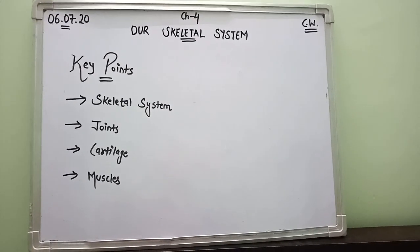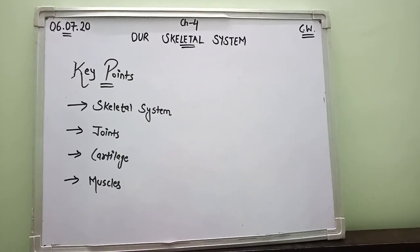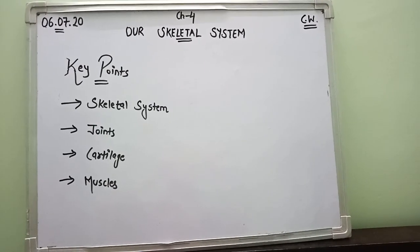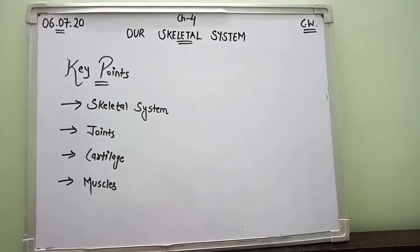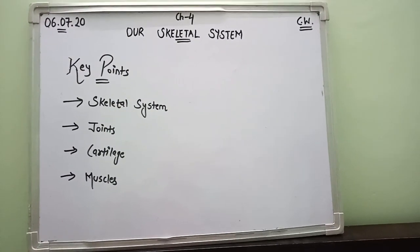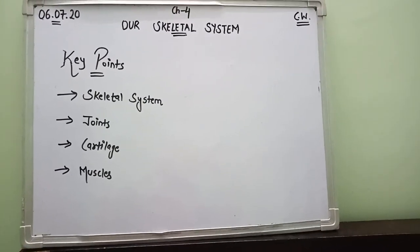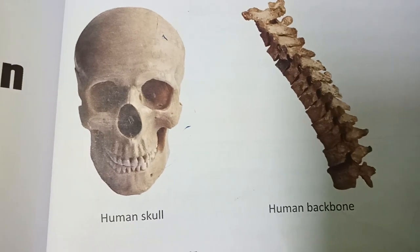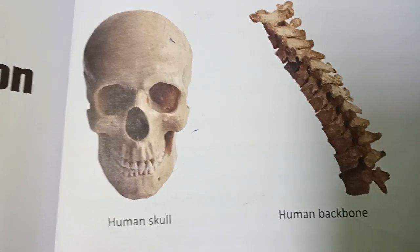Students, let's start your classwork. Take out your classwork copy and mention the date, chapter number, chapter name, and classwork. This is your introduction, so you will write key points: skeletal system, joints, cartilage and muscles — this is all the things we are going to study in this particular chapter. I am giving you a few seconds to watch it properly, and I will be providing you a PDF also on your school website so you can note it down from there as well. In my next video I will be giving you the glossary of the same chapter. Till then, stay healthy, stay safe, keep learning, keep shining and keep smiling. We shall meet again soon in our next video. Goodbye.